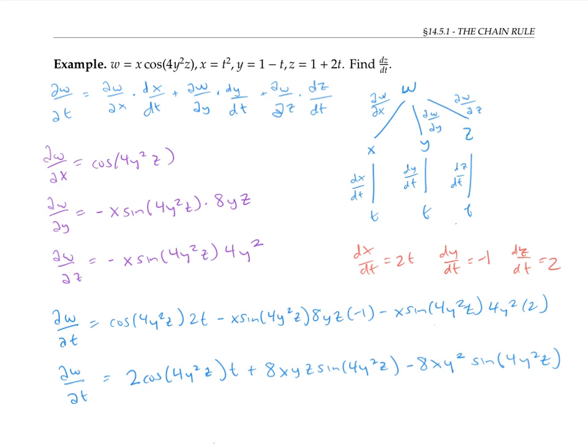Now I could rewrite this further by plugging in for x, y, and z their expressions in terms of t. Then I'd have an expression for partial w partial t that was entirely in terms of the variable t. This might look a little nicer, but in general, it's not necessary to do this sort of substitution.